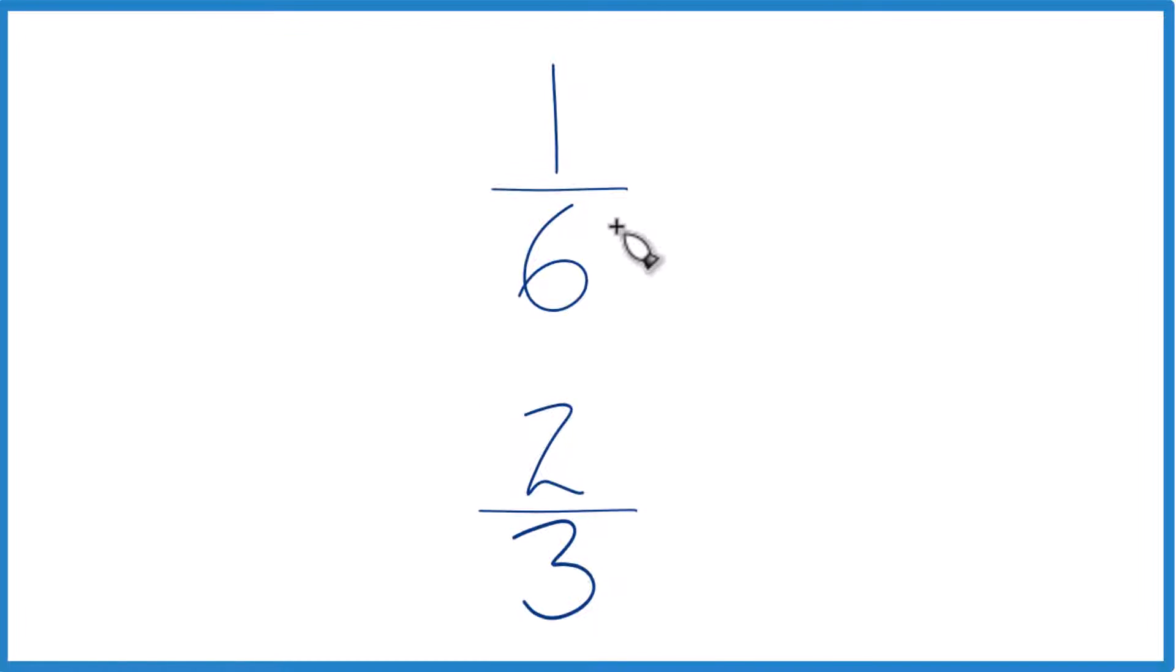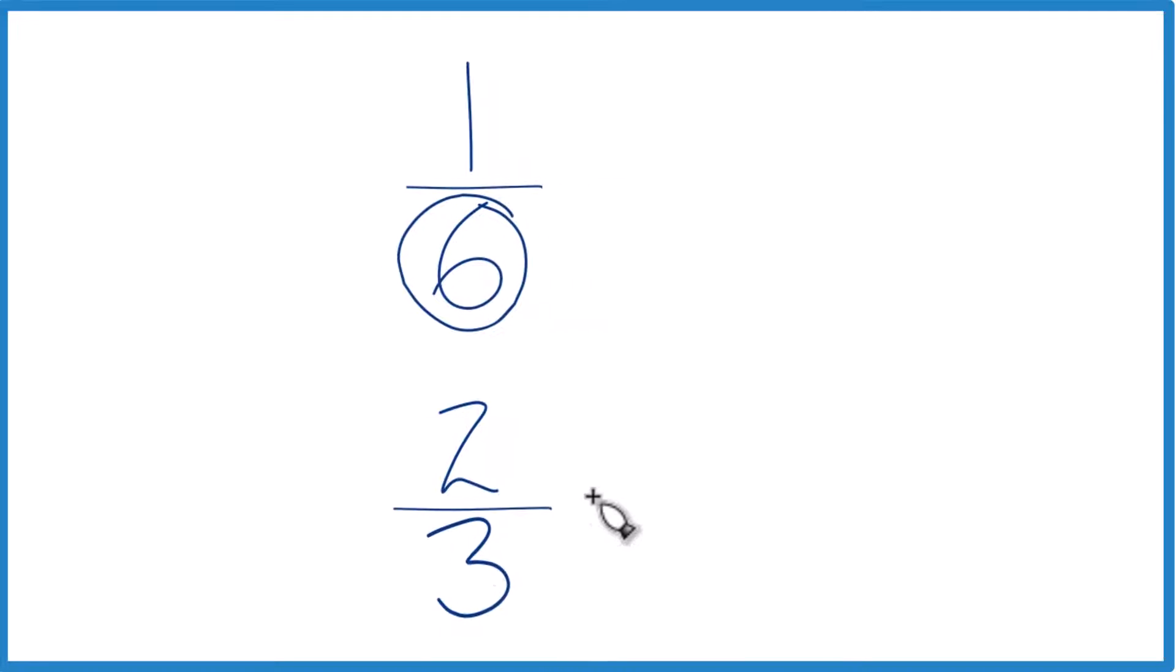The other way is we can find a common denominator and then compare the numerators. We have 6 and 3 right now. We can find a number that 3 and 6 go into evenly. Let's do this.